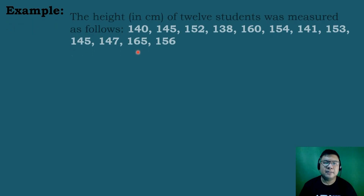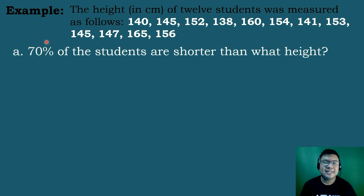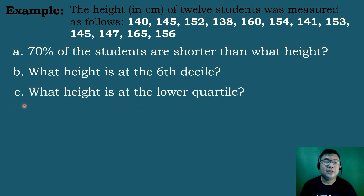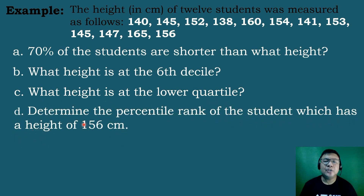Let's look at this example. The height in centimeters of 12 students was measured as follows. Let's try to answer the following questions. Letter A, 70% of the students are shorter than what height? Letter B, what height is at the 6th decile rank? Letter C, what height is at the lower quartile? Letter D, determine the percentile rank of the student which has a height of 156 cm.